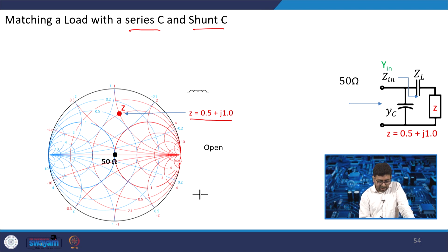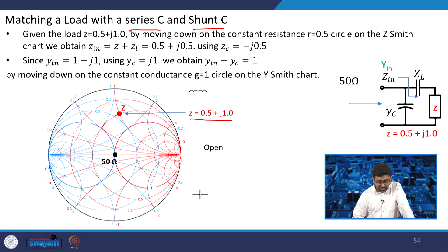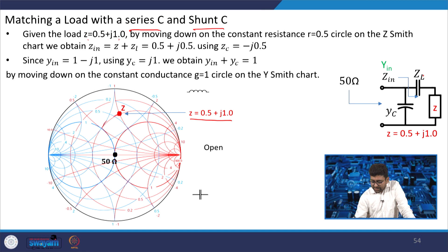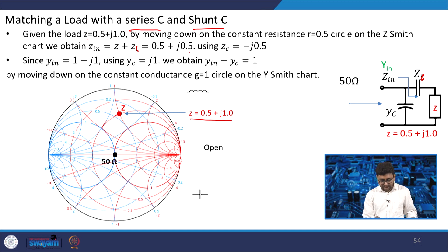What is the solution? Here you can use the Z Smith chart and add a capacitor in series — moving down. If your Z = 0.5 + j1 and you add a capacitor in series, then ZC and Z + ZC = 0.5 plus something. Here you need to add −j0.5.